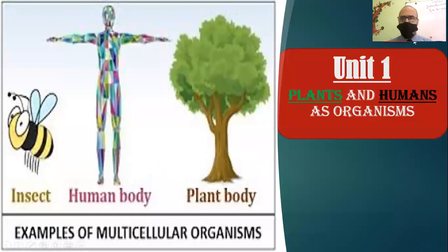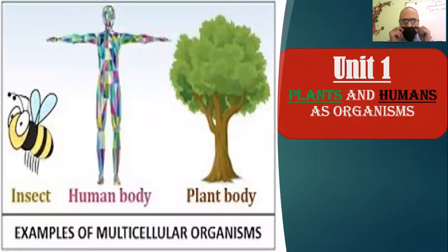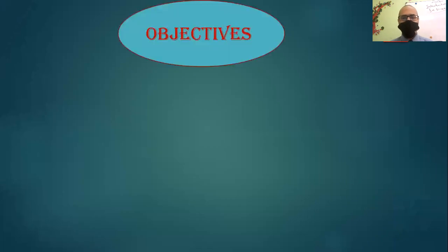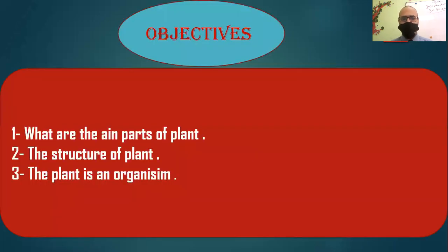Today inshallah we are going to speak about plants and humans as organisms. As you can see in this picture, plant body, human body, and insect are samples of multicellular organisms. Our objectives for today: what are the main parts of plants, the structure of the plant, and the plant as an organism.